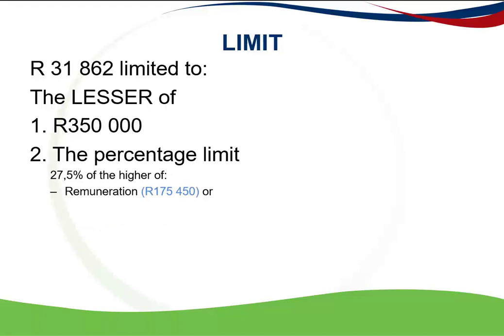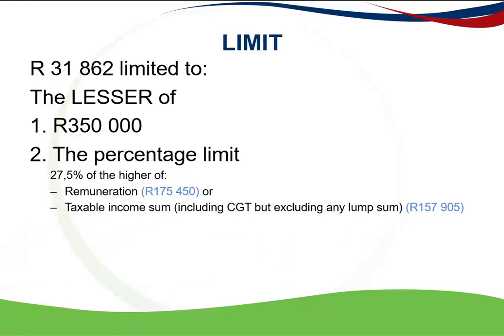For the percentage limit, remuneration in this case was given in the question as R175,450. In some instances you'll have to calculate that yourself, and you will need to know the definition of remuneration from the study unit on prepaid taxes. Please remember that remuneration is different to gross income — there are specific inclusions of certain amounts and it relates to employment.